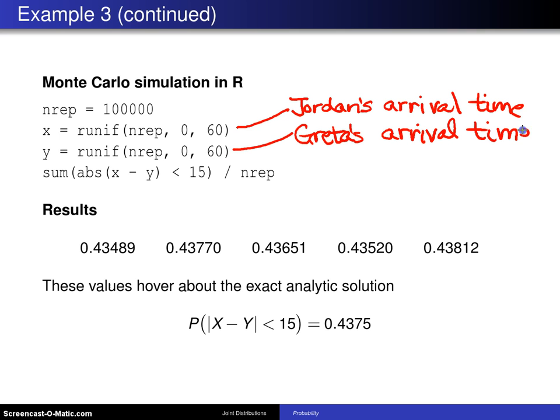And finally, the last thing we do is we add up the number of those where the absolute value of X minus Y is less than 15, divide by 100,000. And when we run these four lines of our code five times, we get 0.43489, 0.43770, etc.